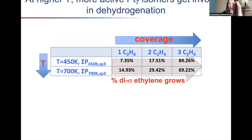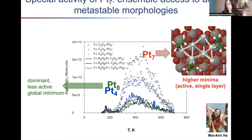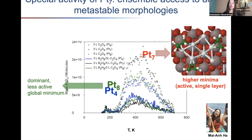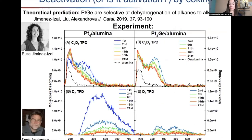For Pt7, at increased ethylene coverage and increased temperature — where more negatively charged states are populated — we see an avalanche of activation events, indicating vigorous dehydrogenation. For Pt8, because of qualitatively different ensemble states populated at higher temperature, we see somewhat reduced activity compared to Pt7. People knew for a long time that every atom counts, but could never say why. I think this is the first time we said this difference in activity is a property of the ensemble.